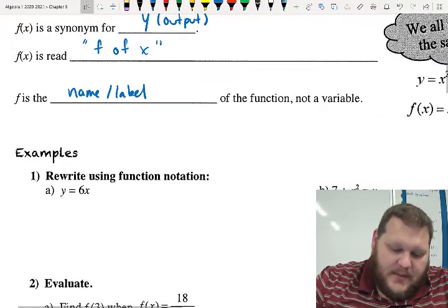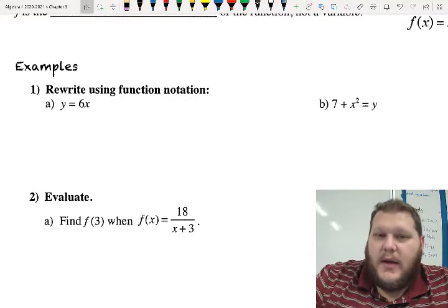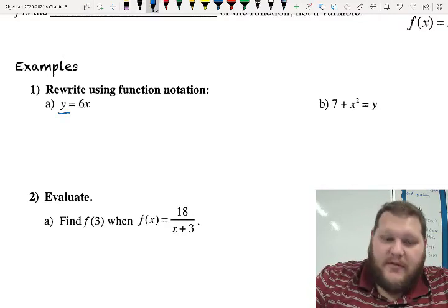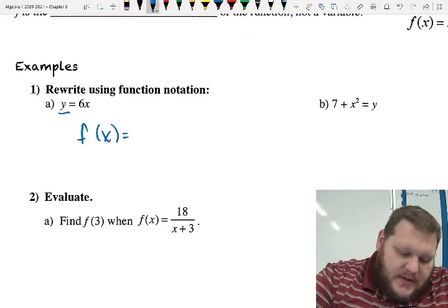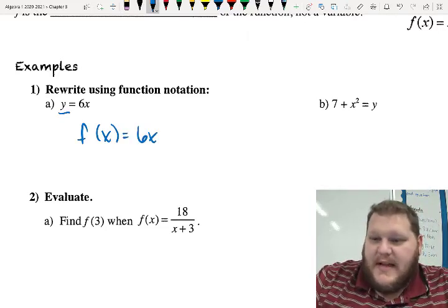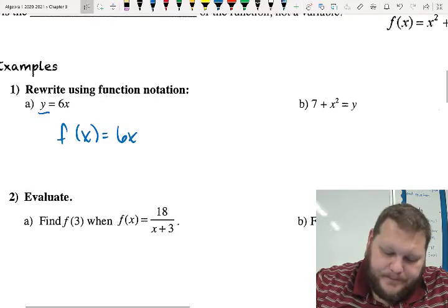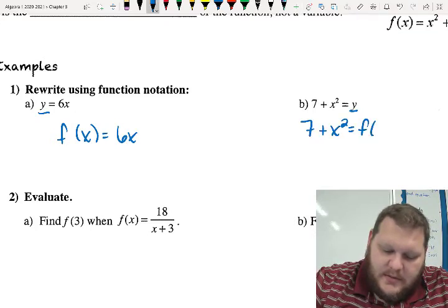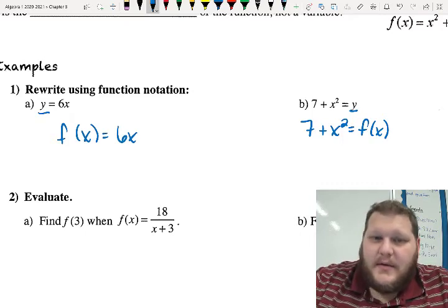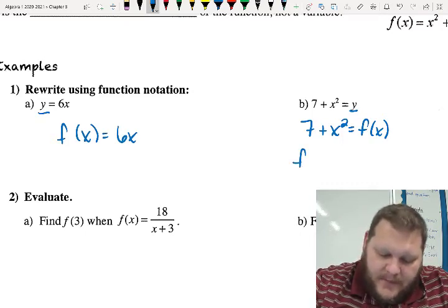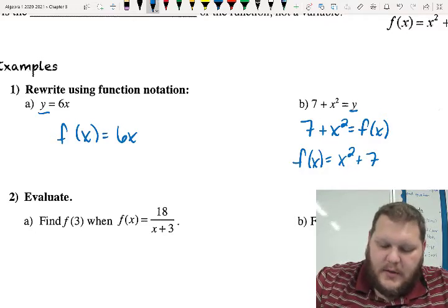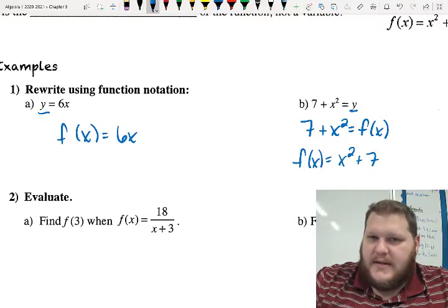So if we know that f of x is the same thing as y, if we're asked to rewrite these equations now in function notation, with our f of x notation, it's really as simple as just replacing my y value with f of x. So here, function notation for this equation would just be f of x equals 6x. For part b, if I get, I'm just replacing my y value with f of x. That's 7 plus x squared equals f of x. That's technically fine. Traditionally, we usually keep my function notation here with my f of x in front. And I'm just going to rearrange it a little bit further because I like it in descending variable order, which we'll get into in later chapters.